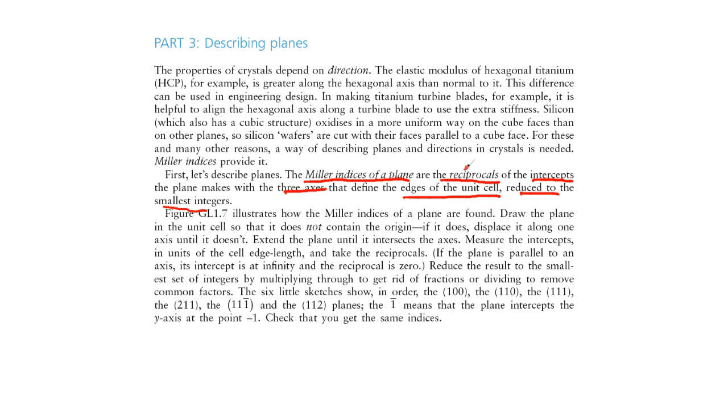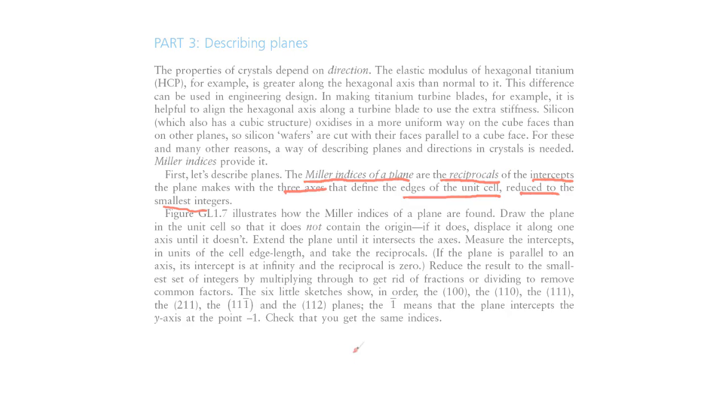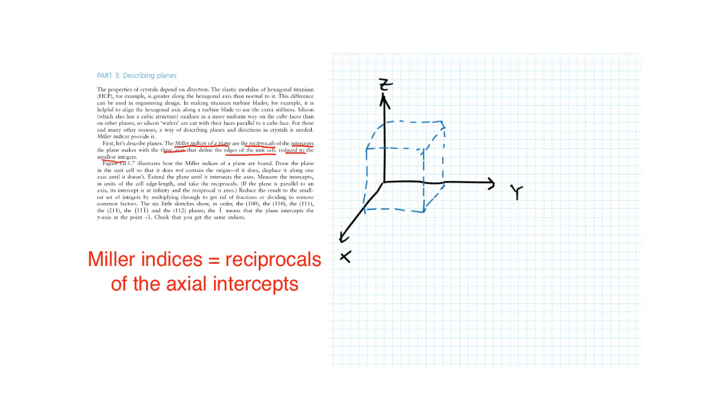First of all, let's start out with this. Here are my three axes, and let's just do an example. Let's try to draw the 1, 1, 1 plane. Now, notice, different from directions, when you draw the planes, or when you write the Miller indices of the planes, you have these parentheses.